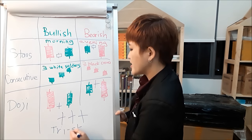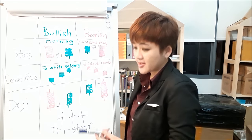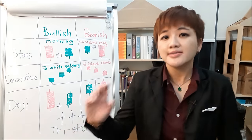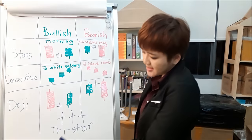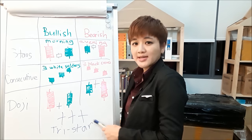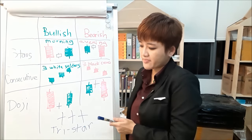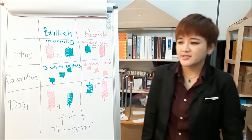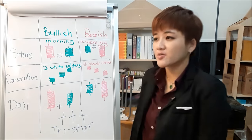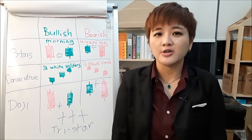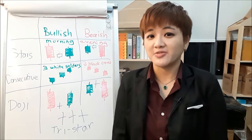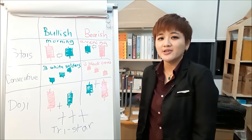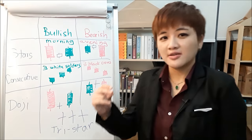The final pattern is the tri-star pattern. Depending on context it can be bullish or bearish: if seen at the end of a bullish trend it is a bearish signal, and at the end of a bearish trend it is a bullish signal. It is not very common, but if you see it, it signals major indecision. I hope this crash course gave you a quick recap on how to use candlesticks. You will also need confirmation indicators — I've done a previous video on that which you can check out.